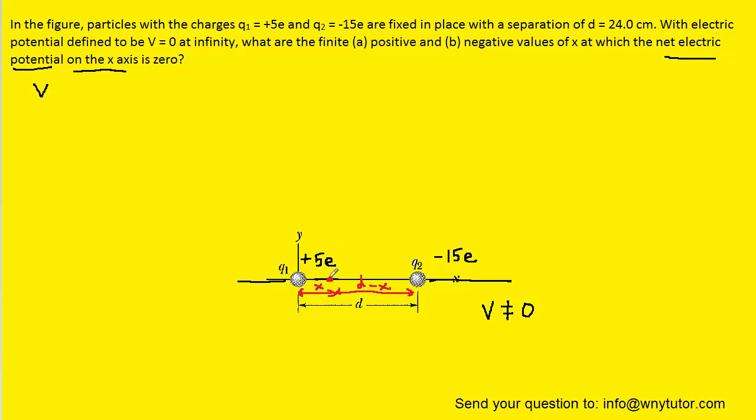And so we can now set up the expression for the total electric potential at this point that we had marked. And we can say that that's going to equal k multiplied by the first charge, q1, divided by that distance from q1 to that point, which we just said was x. And then we'll add that to k multiplied by the charge q2, divided by the distance from that charge to the point, which we said was d minus x. And we're going to be setting that equal to 0.